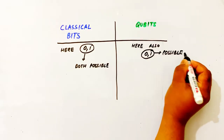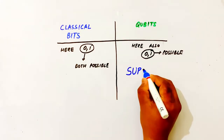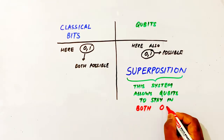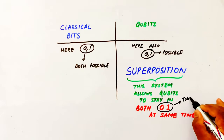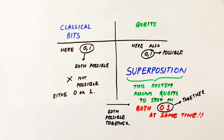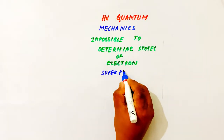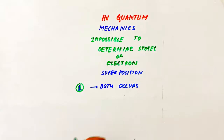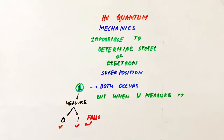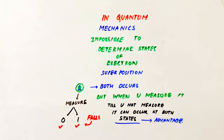What do we need to do with classical bits? Classical bits are 0 or 1. Qubits are also 0 or 1 possible. But what are the advantages of qubits? This is the advantage of superposition. Superposition is the phenomenon from quantum mechanics. It is impossible to determine the state of an electron when in superposition. Superposition means that 0 and 1 are both true at the same time. But when we measure it, it falls into either 0 or 1.